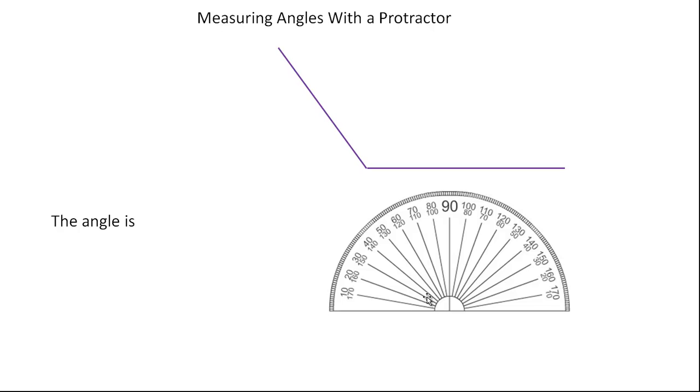And I'll show you in the example here. If I was measuring from this side, this would be zero, and then it goes 10, 20, 30, 40 degrees, et cetera. So if I'm measuring from this side, I would use the outside scale. So I'll show how to do both with this angle.